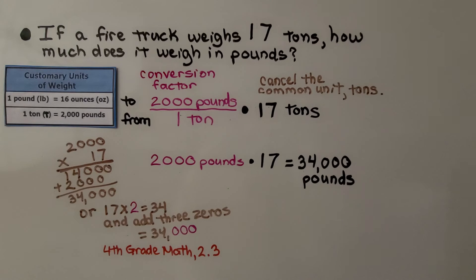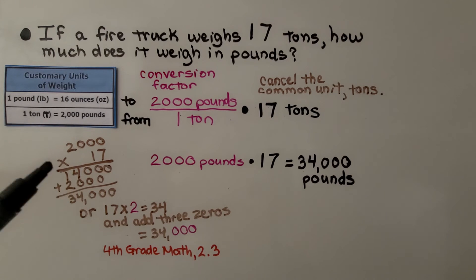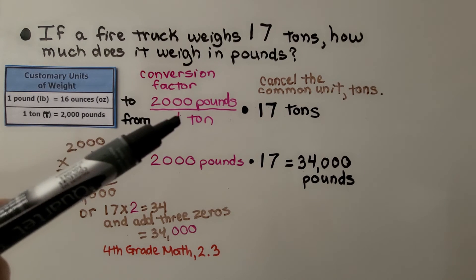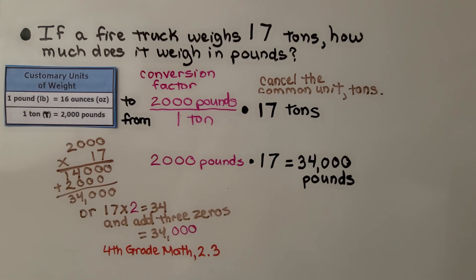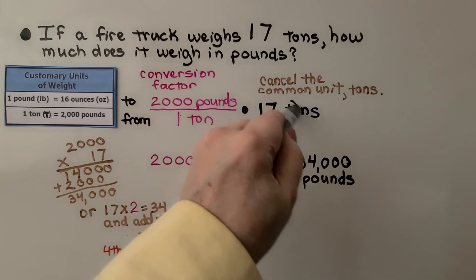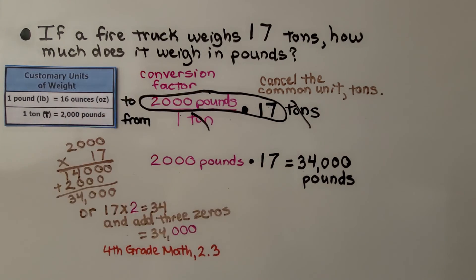A fire truck weighs 17 tons. How much does it weigh in pounds? We can see on this table that 2,000 pounds are in 1 ton. So our conversion factor to go from tons to pounds is 2,000 to 1 ton. We cancel the common unit. We're multiplying it by the 17. We cancel tons and tons and we end up 2,000 times 17. We can do a little math on the side. 2,000 times 17 is 34,000. So we know it's 34,000 pounds.